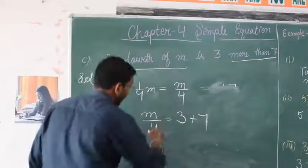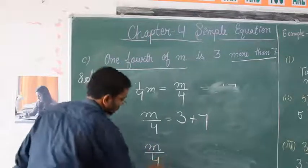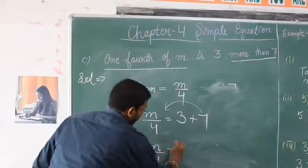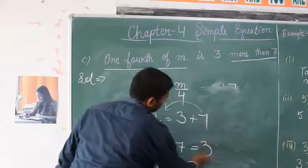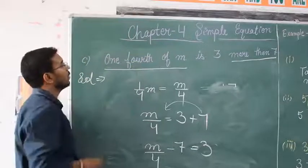We can write this equation as m by 4. We can transfer it to the left side. This will become m by 4 minus 7 equals 3. So we have found the equation from the given statement.